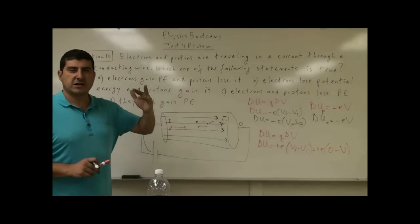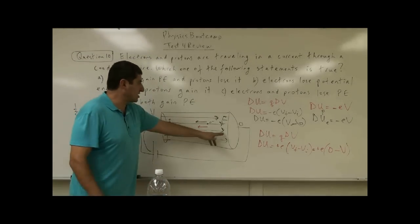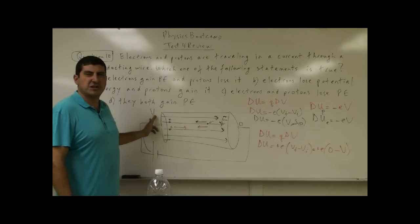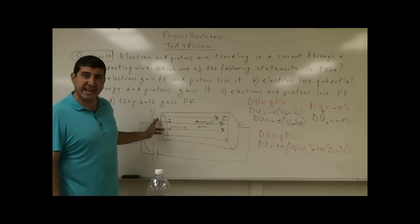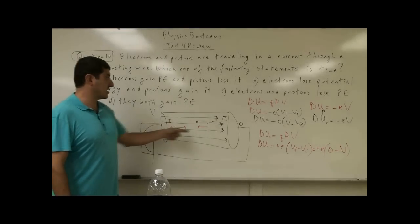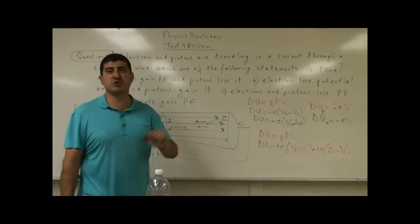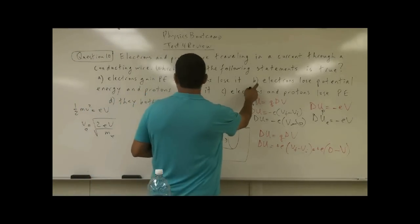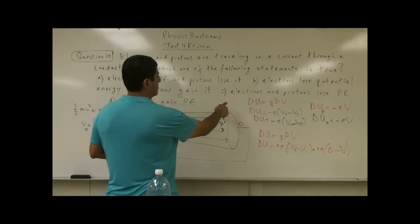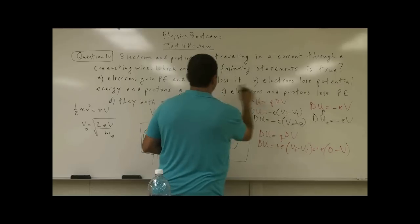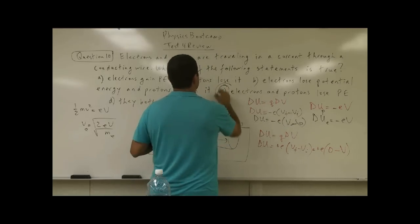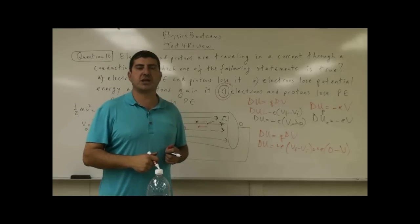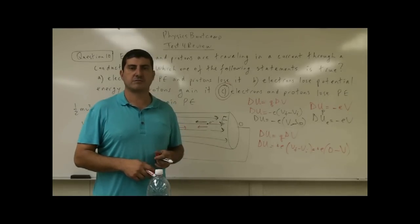This was actually a bit of a trick question. People get confused because they think: the electron likes to go toward higher potential, so maybe its potential energy is gained; and protons go toward lower potential, so maybe they lose it. But working through the math, both electrons and protons lose potential energy. The answer is C. Thank you very much.